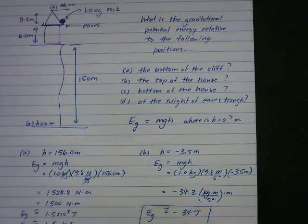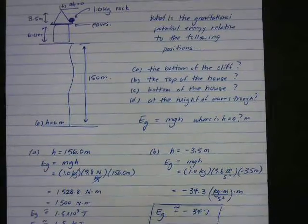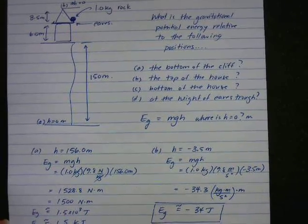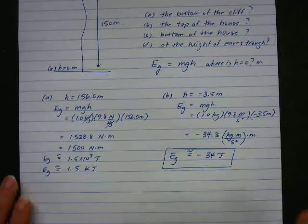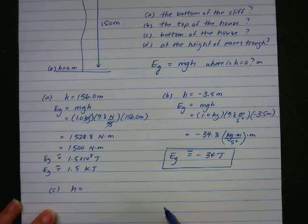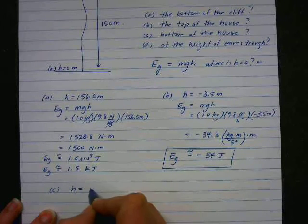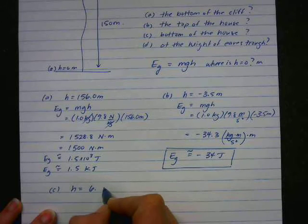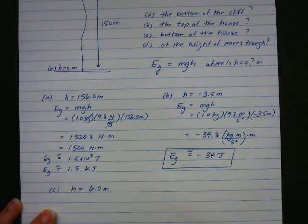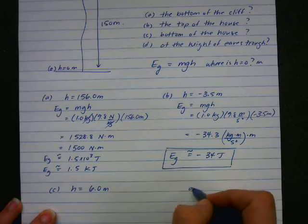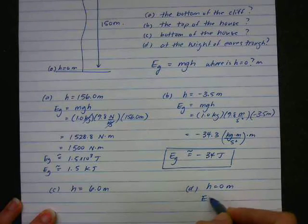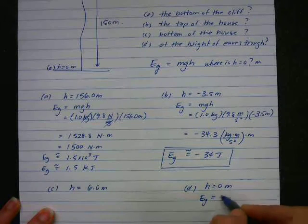So we can go through these. You can zoom out and you will see that h for C, they're asking relative to the house. So h is 6 meters because we're talking relative to the house. And for D, h is 0 meters. So E_g equals 0 joules.